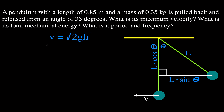We are going to use this equation, derived using conservation of energy from the previous video: the velocity equals the square root of 2 times g (9.81 m/s²) times the height. This height is the change in height of the pendulum from its equilibrium position to its greatest displacement. We know the total length, and this side of the triangle is L cosine theta, so the height is simply the total length minus L cosine theta.